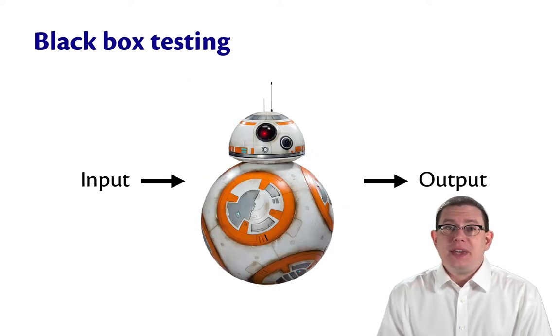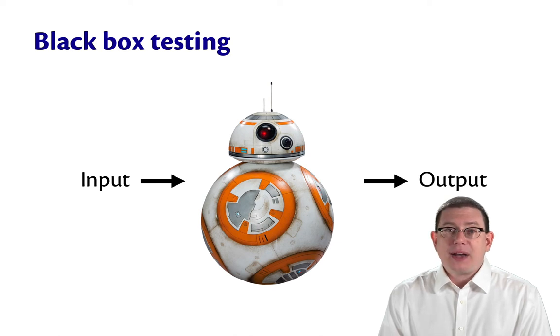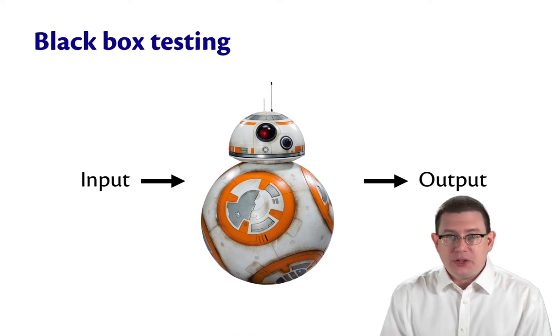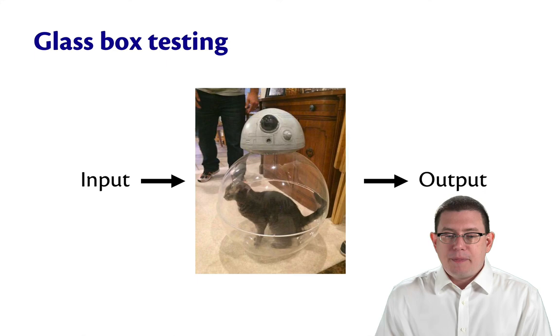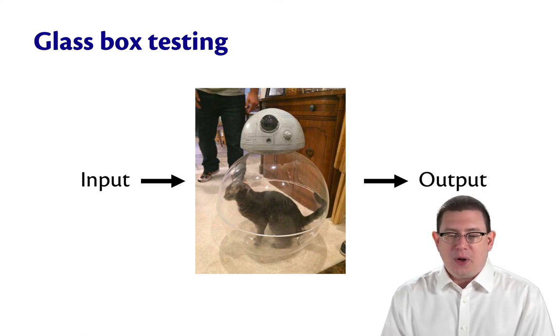If you imagined BB-8, for example, you were trying to unit test BB-8. With black box testing, you would have no idea how the internals of BB-8 work. But with glass box testing, maybe you could see inside to the cat actually running around inside the ball.